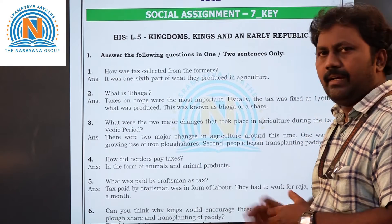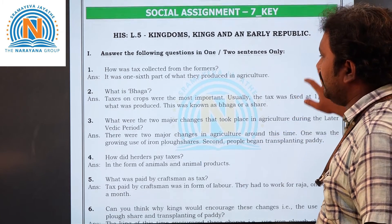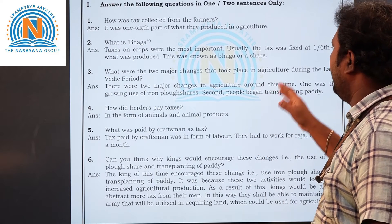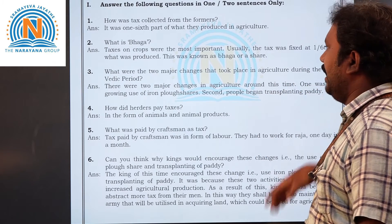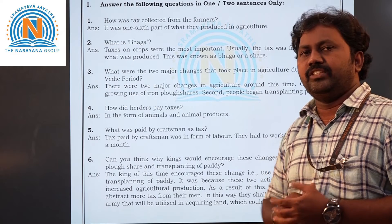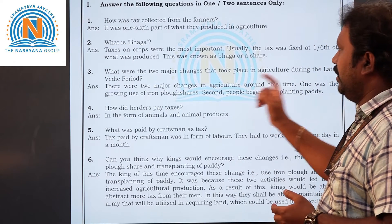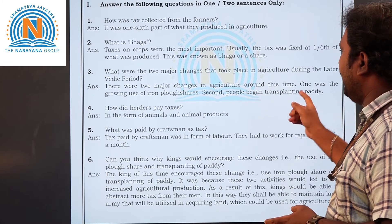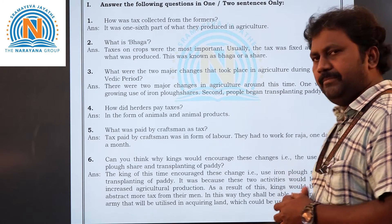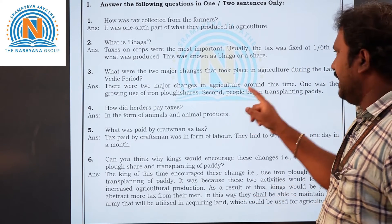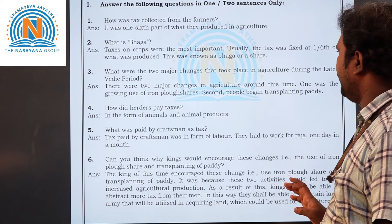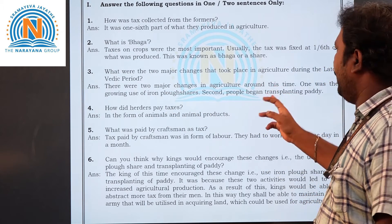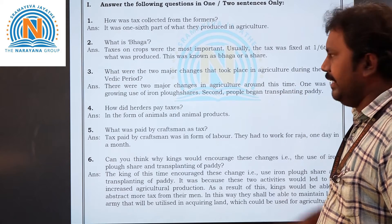Now the third question: what are the two major changes that took place in agriculture during the later Vedic period? There are two changes to learn. First is the use of iron ploughs, and second is that people began transplanting paddy. These are the two major changes in agriculture around this time.